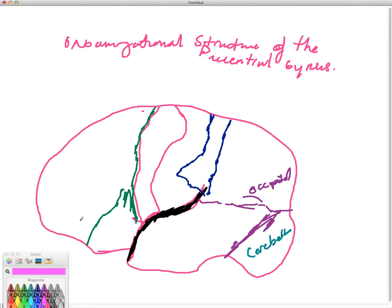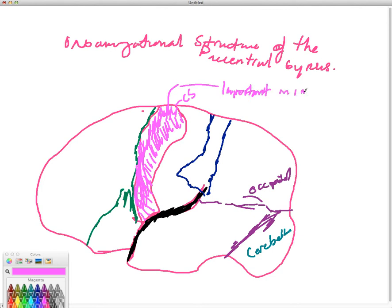So the structure that we're talking now, the precentral gyrus, which is important. This is precentral gyrus. This is central sulcus. This is important in initiating voluntary movements.